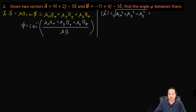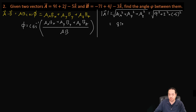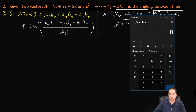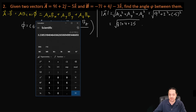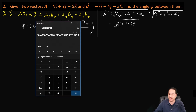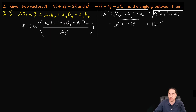Let's plug in numbers: that's 9 squared plus 2 squared plus negative 5 squared, then take the square root. That's 81 plus 4 plus 25 — the square root of 110. The square root of 110 is 10.5, so the magnitude of A is 10.5.